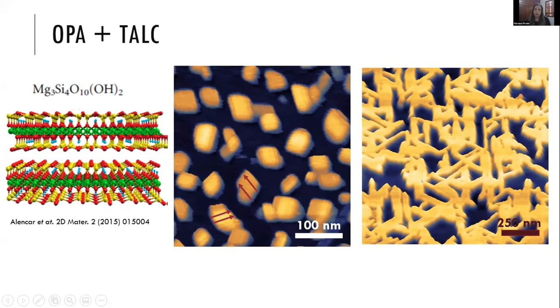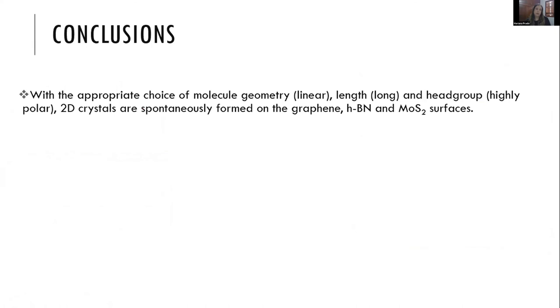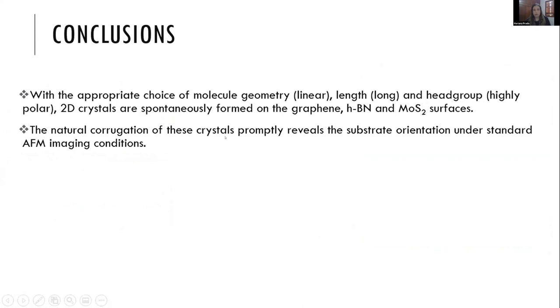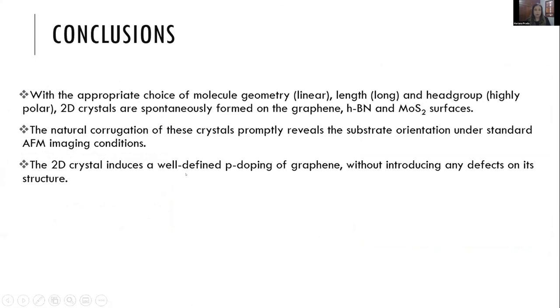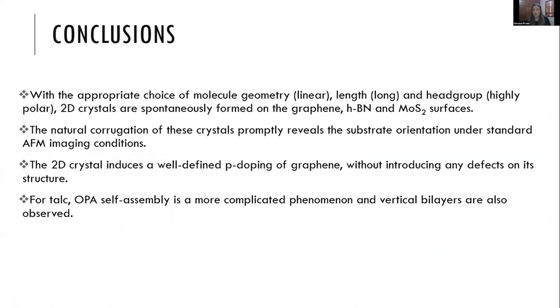Our conclusions are that with the appropriate choice of molecular geometry—linear, long, and highly polar head group—2D crystals spontaneously form on graphene, hexagonal boron nitride, and MoS2 surfaces. The natural corrugation of these crystals can be used to reveal substrate orientation under standard AFM conditions. The 2D crystals induce well-defined p-type doping of graphene only. For talc, OPA self-assembly is more complicated and we are still investigating that system.